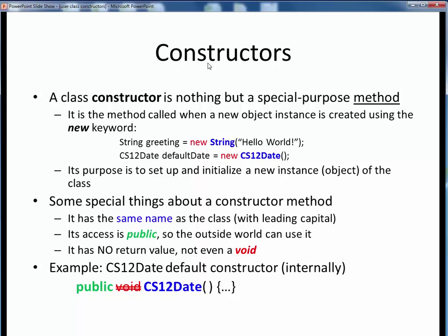For starters, a constructor in a Java class is nothing but a method, but it's a very specific, special method. A constructor is the method that gets called when we instantiate a new object using the new keyword.